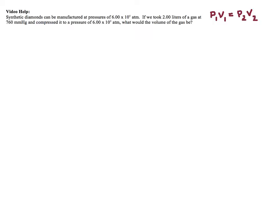And so if I go through and do this, it says synthetic diamonds can be manufactured at a pressure of 6.00 times 10 to the 4th atmospheres. Fun fact. If we took 2 liters of a gas, so automatically, that's where I'm starting, so I'm going to say my V1 equals 2.00 liters.